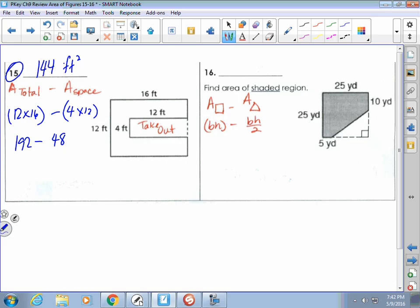Shaded? So again, some type of subtraction. So the whole square, which would be 25 squared, or 25 times 25, minus the triangle. Now, I need the base and I need the height of the triangle.